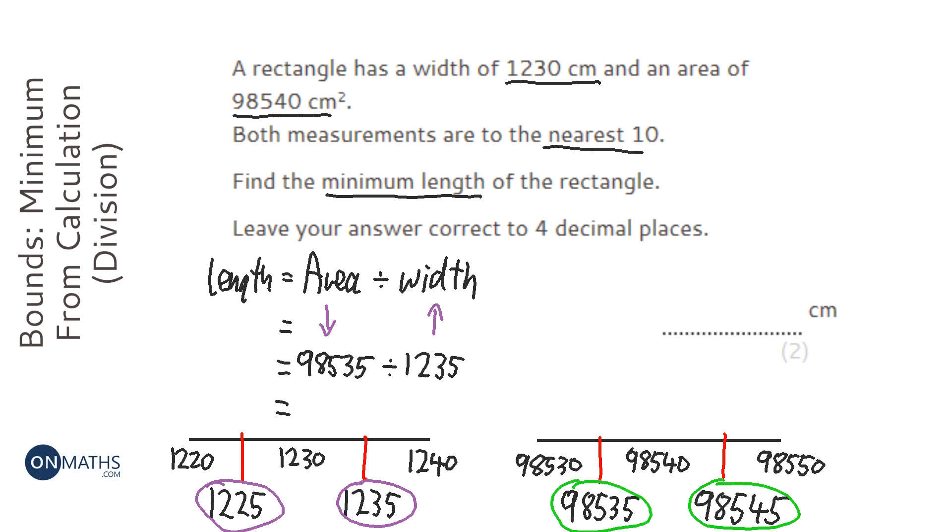And let's work that out on my calculator. So 98,535 divided by 1,235, which is 79.7854251. It wants it to four decimal places, so 79.7854.